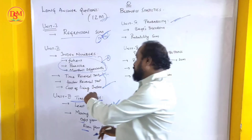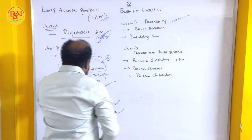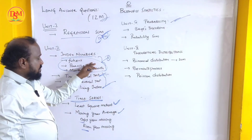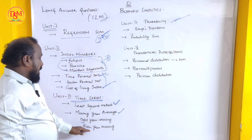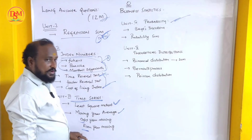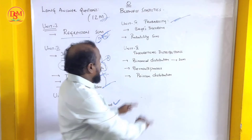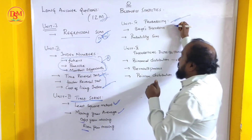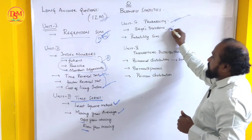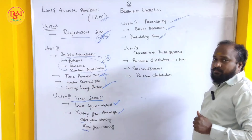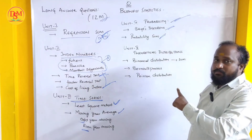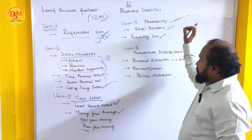For short questions: Fisher's Ideal Index Numbers will have a short question, and Moving Average will also have a short question. For Unit 4 Probability, Bayes' Theorem related one sum and a Probability related one sum — I'll make a video on this very important question.